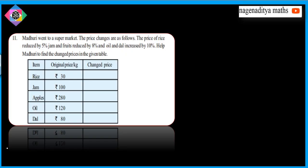Welcome to 8th class. Problem 11 — Madhuri went to a supermarket. The price changes are as follows: the price of rice reduced by 5 percent, jam fruits reduced by 8 percent, and oil and dal increased by 10 percent. Help Madhuri to find the changed price in the given table.